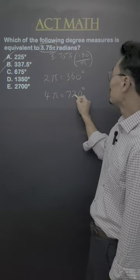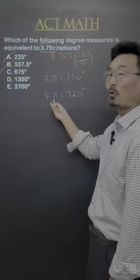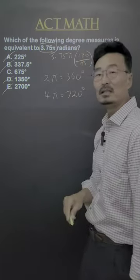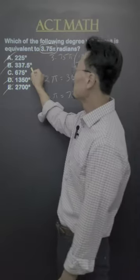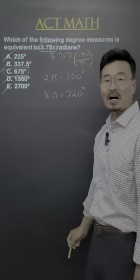Next, since 4 pi is 720, and 3.75 pi is less than 4 pi, anything greater than 720, or D and E, needs to be eliminated. That leaves us with the answer choice C, which you should be able to do in 5 seconds.